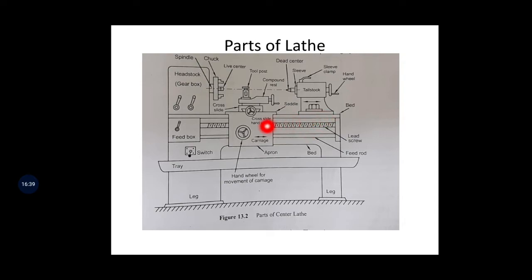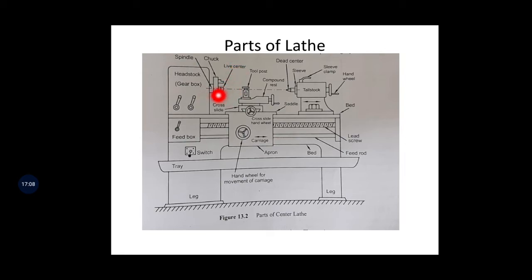At the top of the bed you can see the guideways. Next is the headstock - it is like our head. All mechanisms including the gearbox and spindle are inside the headstock. The three-jaw chuck is fixed to the spindle where the workpiece is fixed - it is called the live center because it is rotating. The headstock is mounted on the left-hand side of the lathe bed. It consists of a spindle and is a housing for the spindle driving gears and all mechanisms.